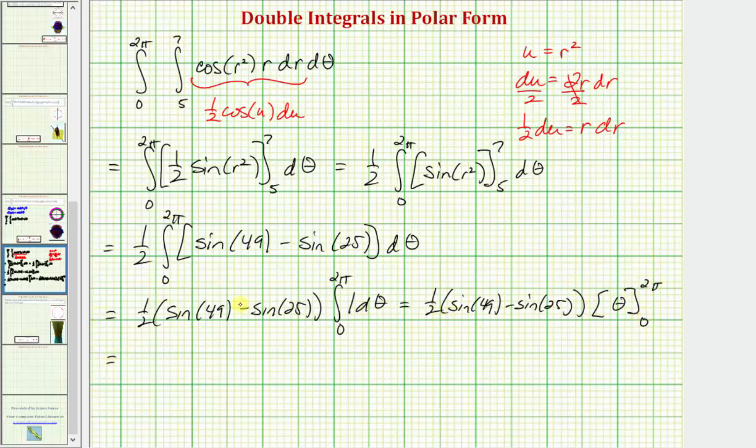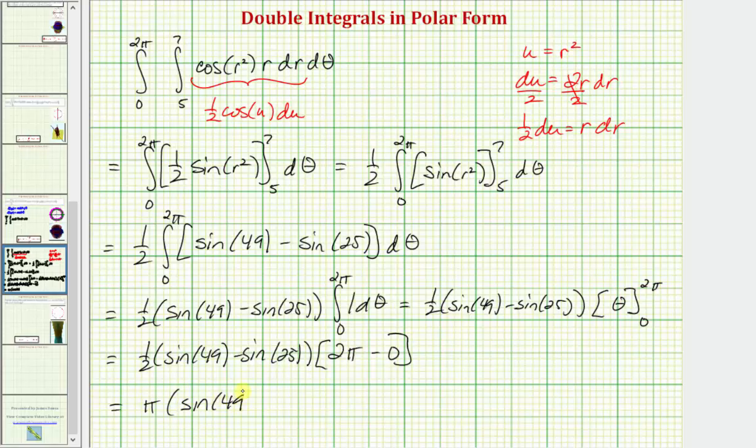So finally, we have this constant times, when theta is two pi, we have two pi, when theta is zero, we have zero. So the exact value of our double integral, notice here we have one half, and then we have times two pi, that'd just be pi. So the exact value would be pi times the quantity sine 49 minus sine 25.